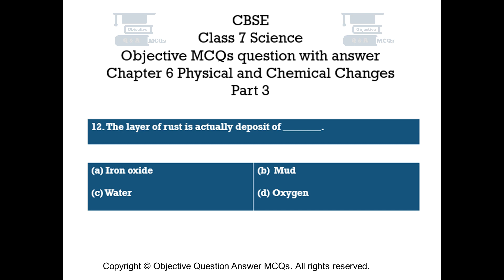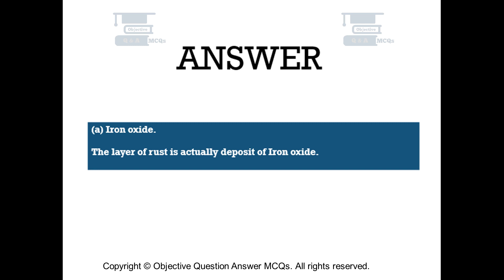Question number 12. The layer of rust is actually a deposit of: Option A iron oxide, Option B mud, Option C water, Option D (not stated). The right answer is Option A — iron oxide. The layer of rust is actually a deposit of iron oxide.